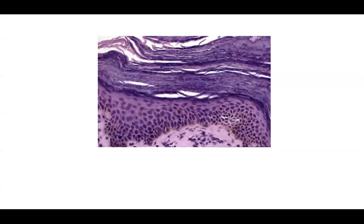Instant recognition: you can see many granules within the stratum corneum, with retained nuclei but abundant granules — it looks like an extension of the granular layer within the parakeratosis. This is called granular parakeratosis, and it occurs typically in the axilla — axillary granular parakeratosis. Review it clinically; it looks similar to other entities and biopsy is key.